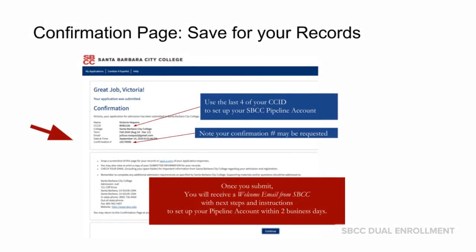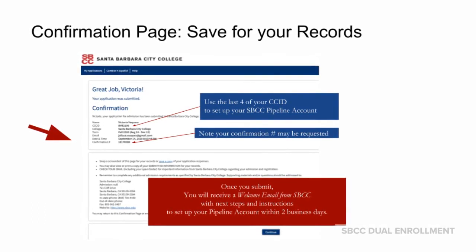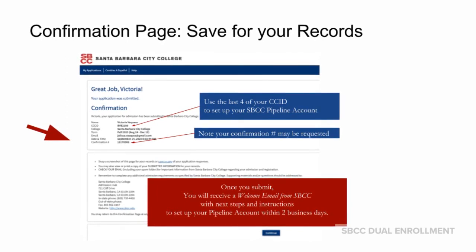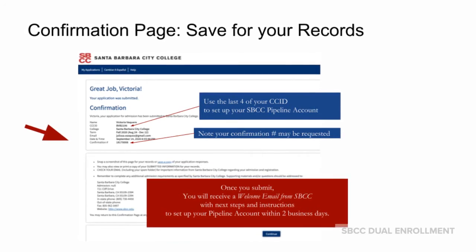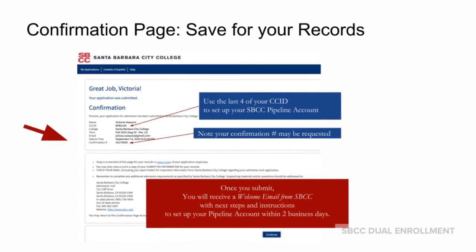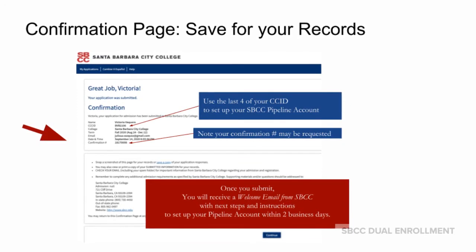From video guide number two, you'll recall submitting your application for admission. This is the confirmation page you should have saved for your records. Please note your CC ID, starting with two letters and four numeric digits. Use these last four numbers of your CC ID to set up your SBCC pipeline account.